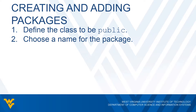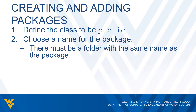The next step is we need to choose a name for the package. We've seen pre-made packages before, like the util package and the IO package. We have to give a name for our package as well. It's worth noting that there has to be some folder with the same name as the package, otherwise this doesn't work correctly. You're going to have to create a folder with the name of the package and put the classes that are part of the package in that folder.